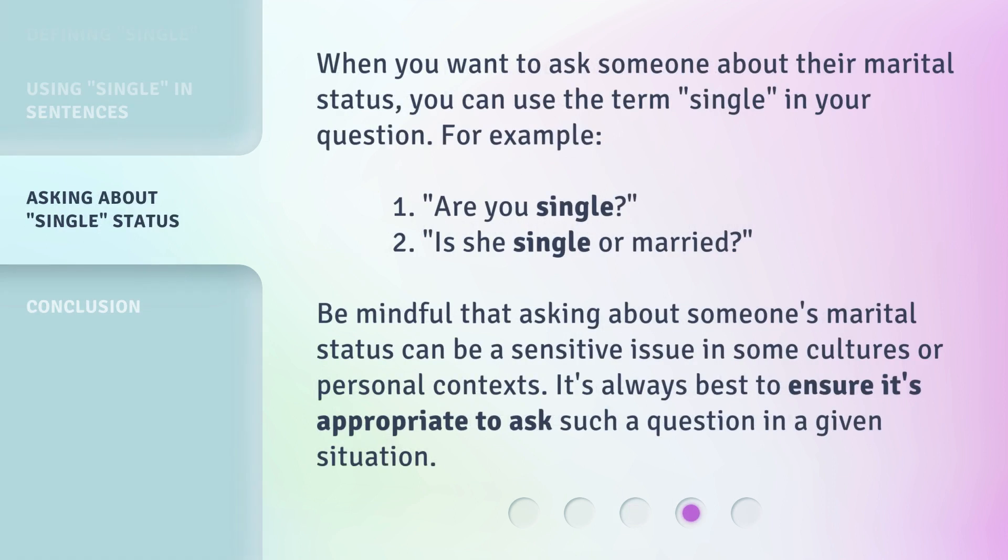When you want to ask someone about their marital status, you can use the term Single in your question. For example: 1. Are you Single? 2. Is she Single or Married? Be mindful that asking about someone's marital status can be a sensitive issue in some cultures or personal contexts. It's always best to ensure it's appropriate to ask such a question in a given situation.